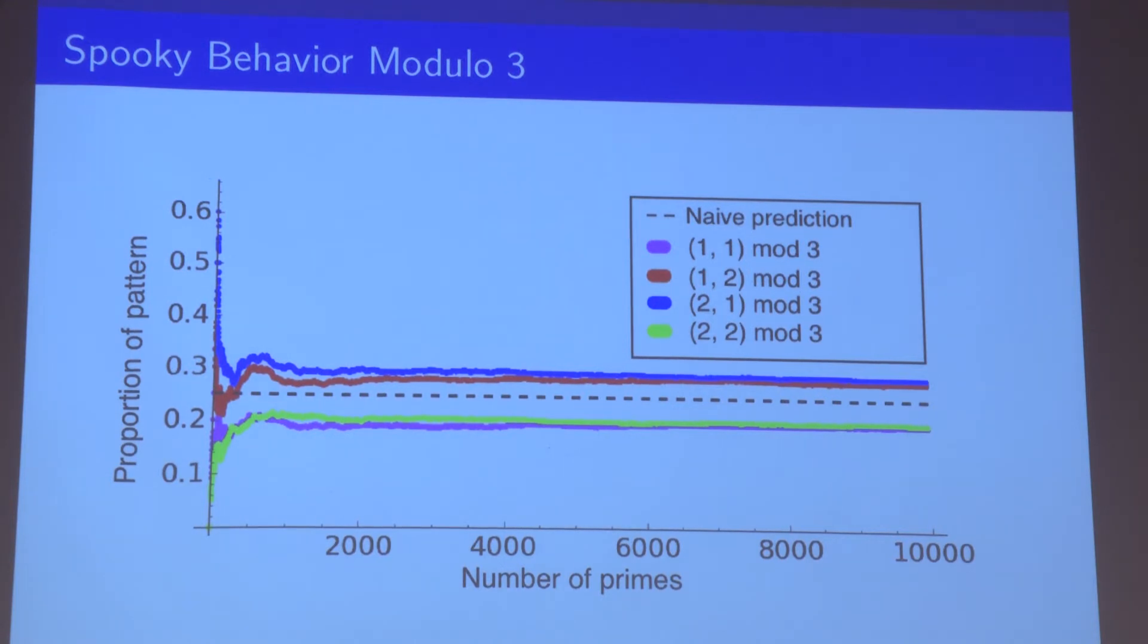But if you look at the other data points, it's not even clear if they converge at all to the expected line of 0.25. Some of them are above and some are below. So we'd like to actually explain why this kind of spooky behavior occurs.